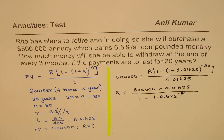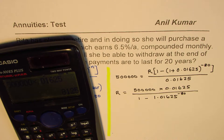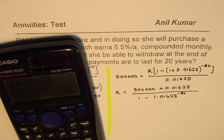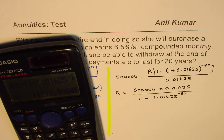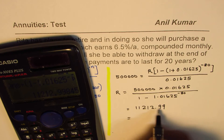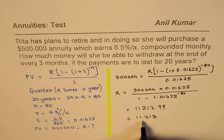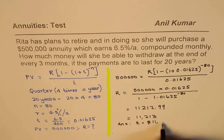So that becomes the value of r. We can use the calculator to figure this out: 500,000 times 0.01625, divided by (1 minus 1.01625 to the power of minus 80). That gives us a value of r equal to 11,212.99, which we can round to $11,213. So the regular payments will be r equals $11,213.